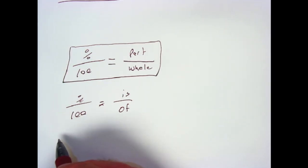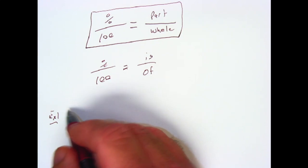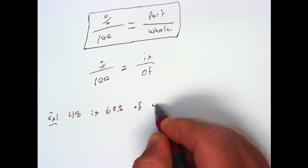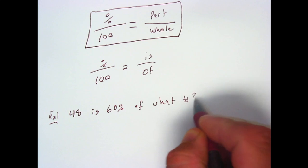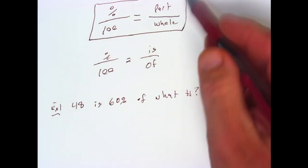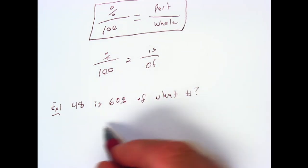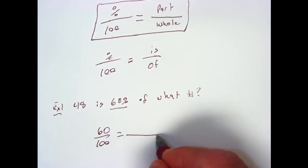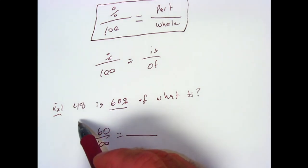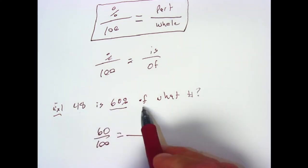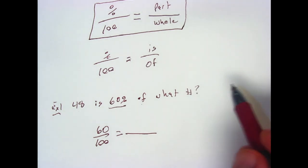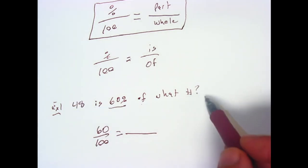Here's example one. 48 is 60% of what number. So we can use either one of these that we want to, but here's the way it works. Percent is the percent, so we have a percent. So that's going to be 60 over 100 makes 60%. We need to decide is 48 a part or a whole. So it says 48 of what number? What does that sound like to you? To me that sounds like 48 is part of something.